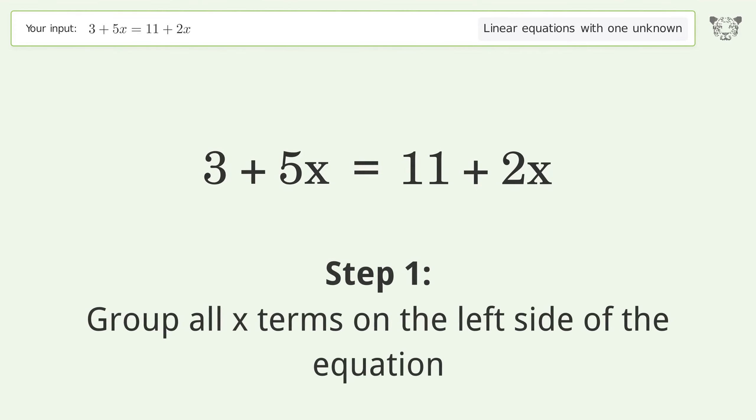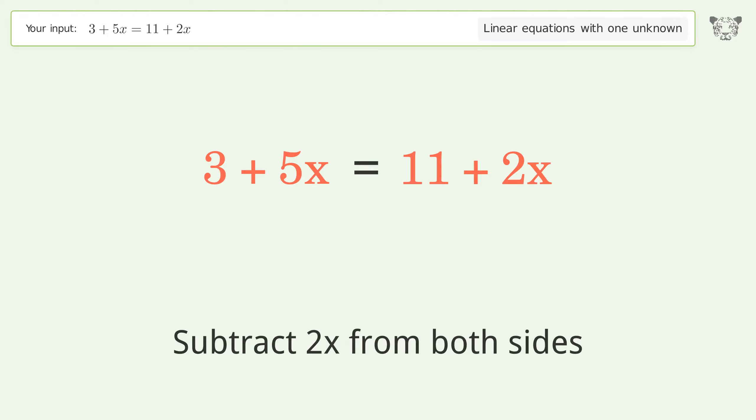Group all x terms on the left side of the equation. Subtract 2x from both sides.